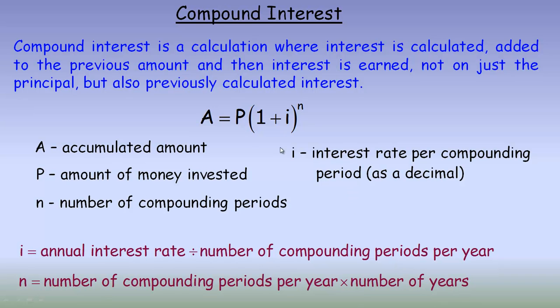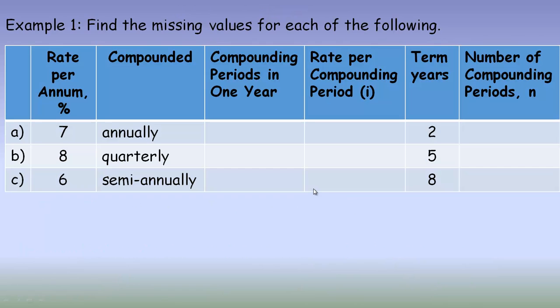That's what the formula looks like. On the next page we're going to take a look at calculating the missing values: the compounding periods per year, the i value, and the n value.